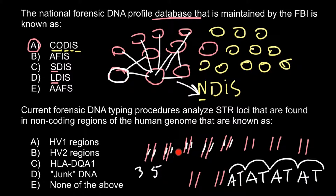On another chromosome pair, we may also have different numbers of repeats, or it can be the same — for example, 6 and 6. When we analyze all these highly variable STR fragments, we get different numbers and different combinations of repeats. The total number of variations exceeds the population of our planet.